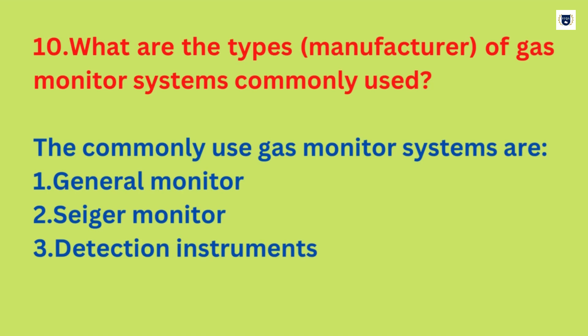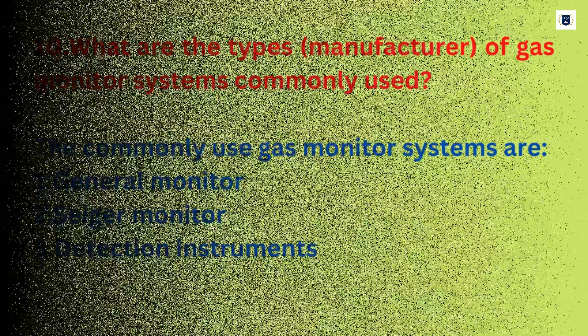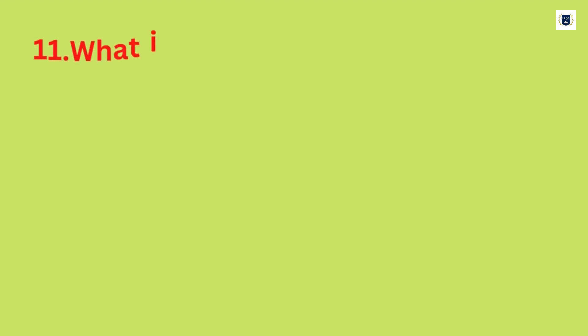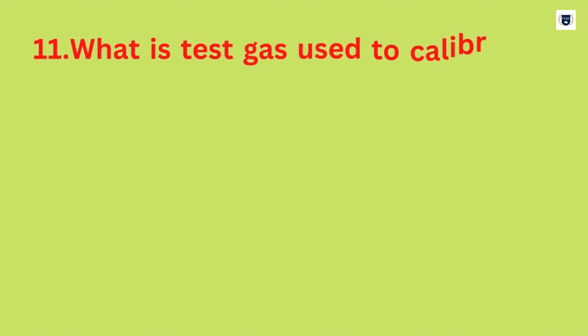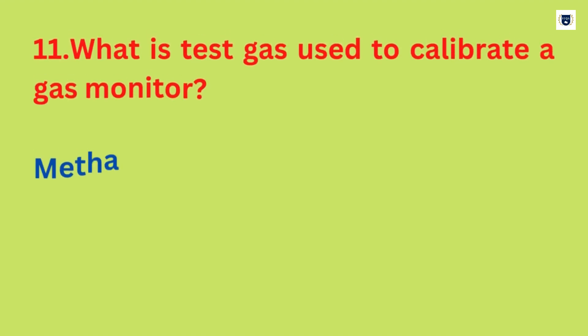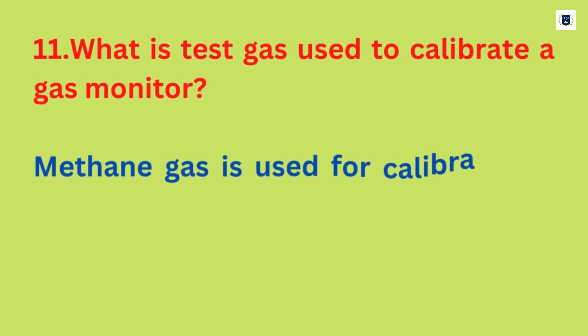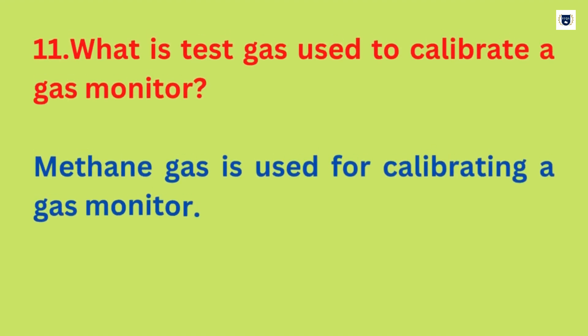What are the types of gas monitor manufacturers? The commonly used gas monitor systems are: one, General Monitor; two, Seger Monitor; three, Detection Instruments.